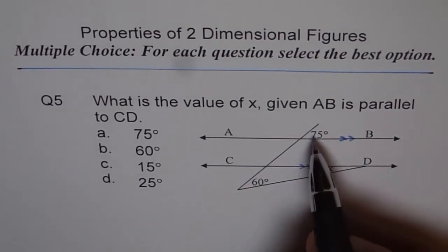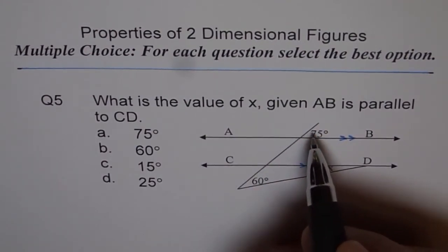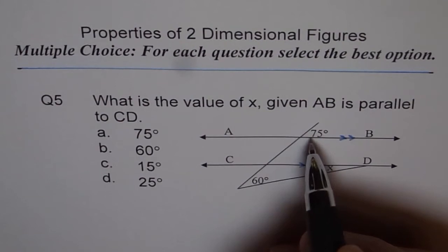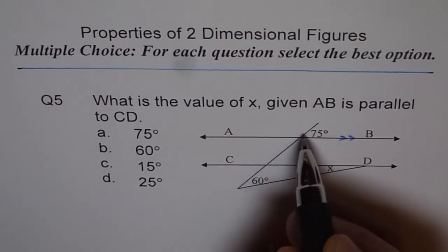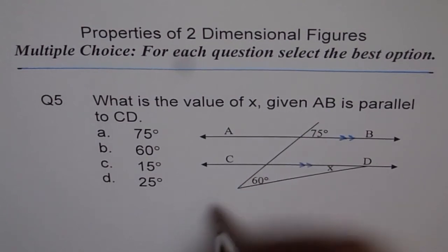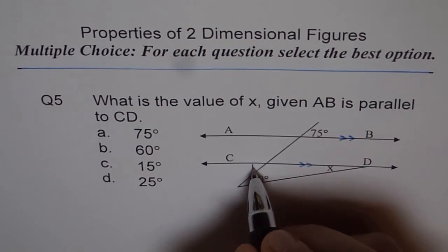Well, when these two lines are parallel and we have a transverse line, in that case 75 degrees is equal to this 75 degrees, alternate angles. You can say this 75, this 75 degrees are equal. They are alternate angles.